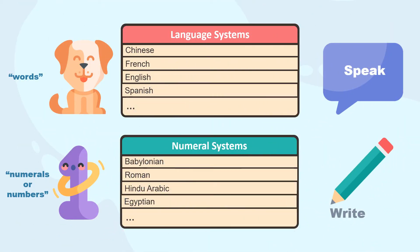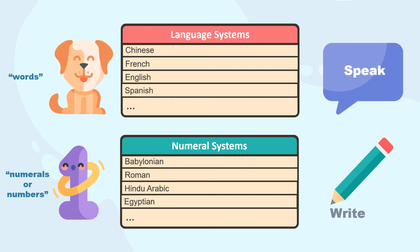Still not sure? Let's compare. In languages, we have words that can represent things, and we can choose from the many language systems to speak that word. Let's take the word 'dog.' If we chose the French language, we would say 'chien.' Or if we chose the Spanish language, we would say 'perro.' And if we chose the English language, we would say 'dog.'